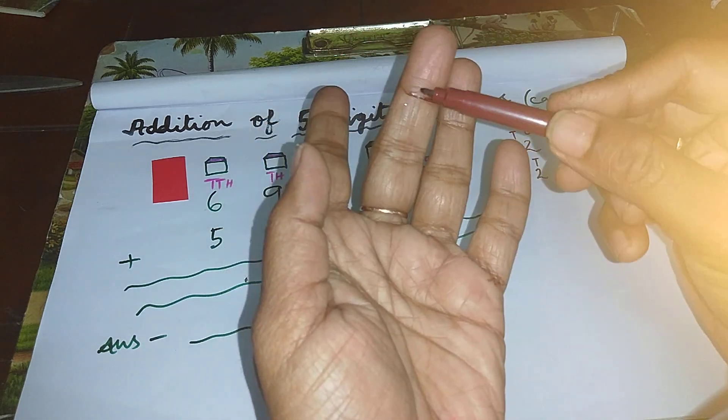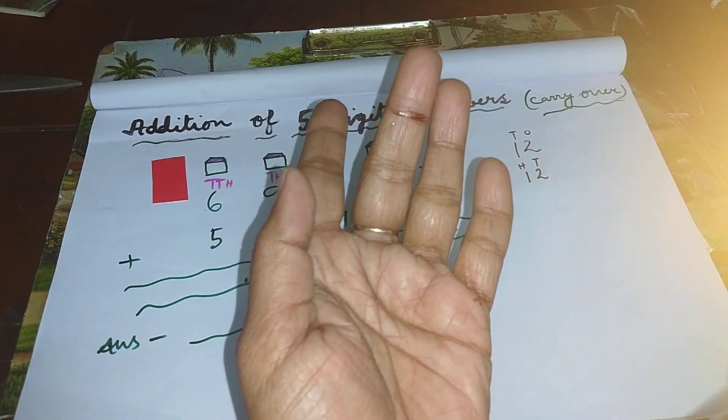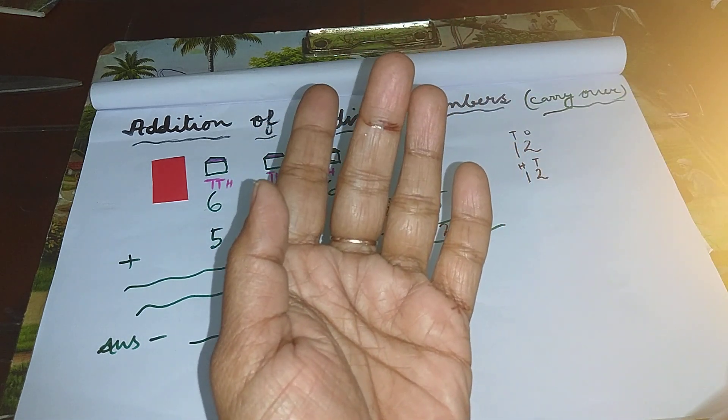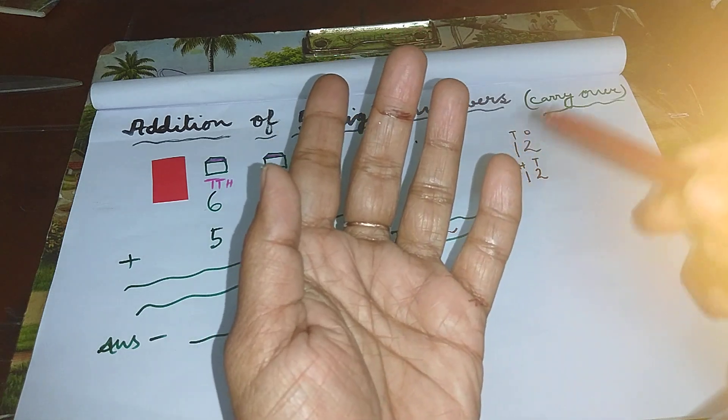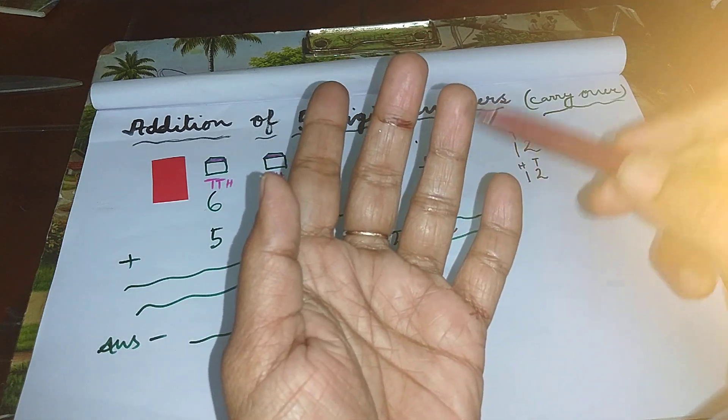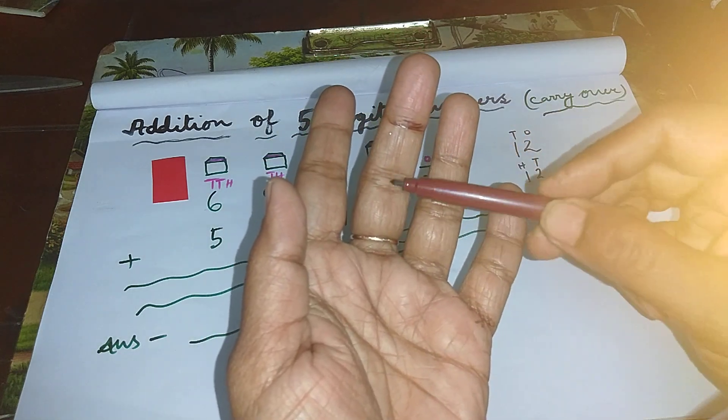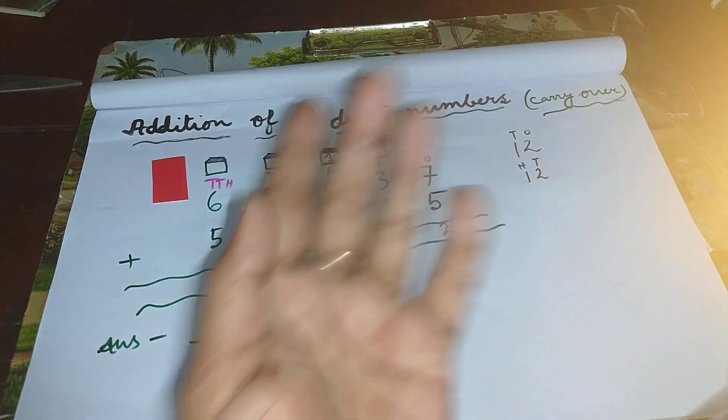See, children, from here to here, total how many lines are there in all? One, two, three, four, five, six, seven, eight, nine, ten, eleven.